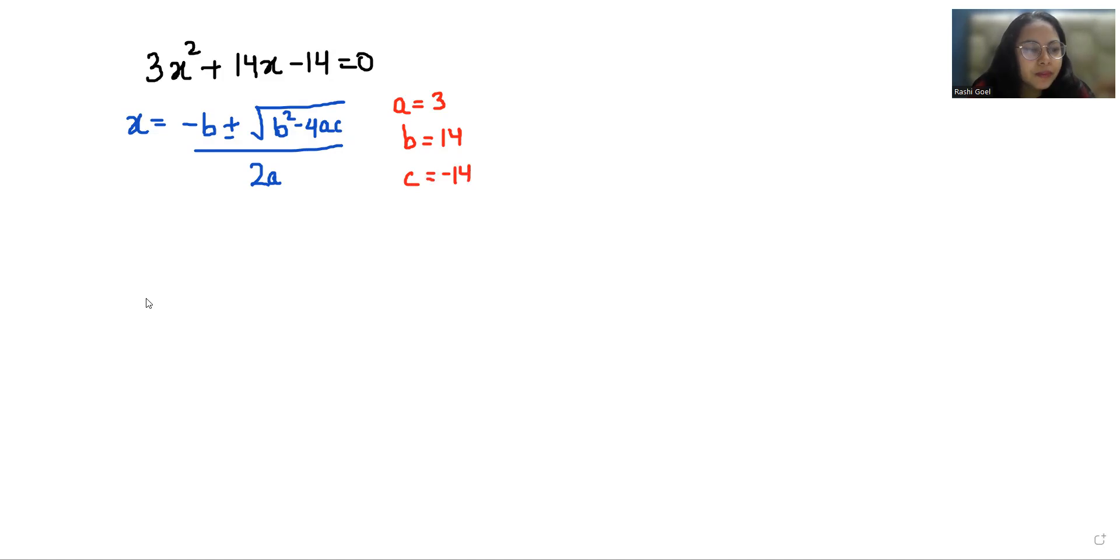So let's put all the values. x equals minus 14 plus minus under root 14 square minus 4 times 3 times negative 14, by 2 times 3.